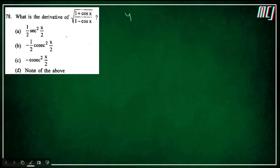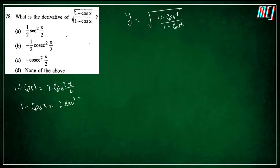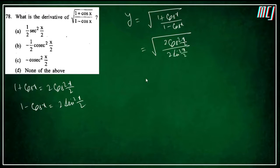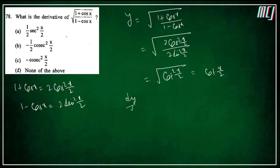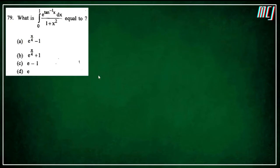Next question: y = √((1+cosx)/(1−cosx)). Formulas: 1+cosx = 2cos²(x/2), 1−cosx = 2sin²(x/2). तो y = √(cos²(x/2)/sin²(x/2)) = cot(x/2). dy/dx = −cosec²(x/2) · (1/2) = −(1/2)cosec²(x/2). Option B is the correct answer.